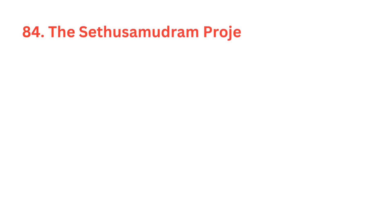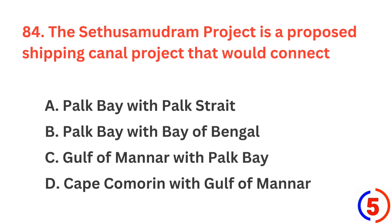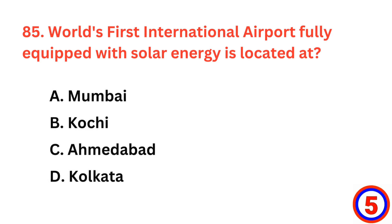The Sethusamudram project is a proposed shipping canal project that would connect? The right answer is option C — it connects Gulf of Mannar with Palk Bay. World's first international airport fully equipped with solar energy is located at? The correct answer is option B, Kochi International Airport.